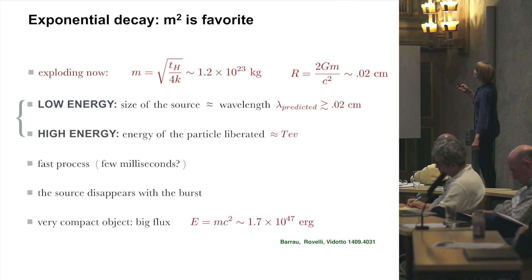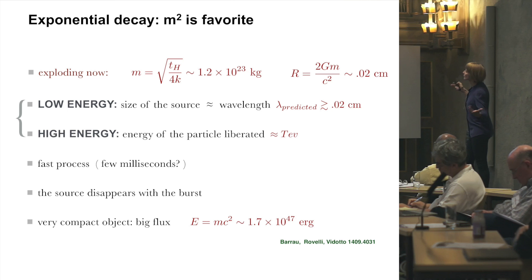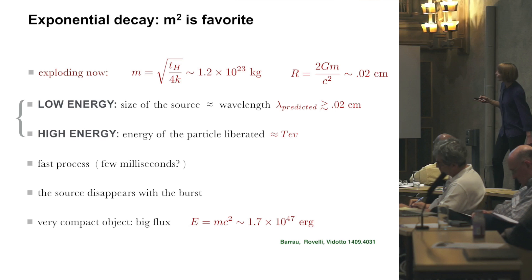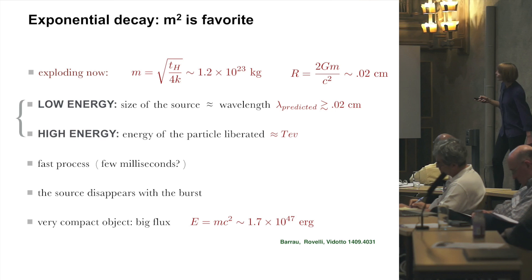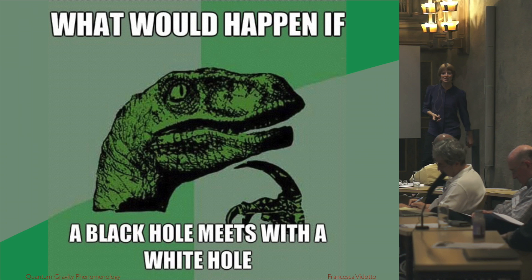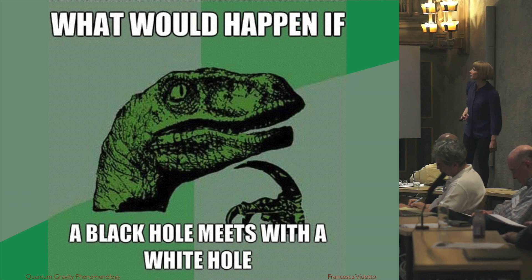This mass is not too small and not too big — it sits within the standard range for primordial black holes. Its energy corresponds to a very large flux of energy. So the question is: have we already seen something like this in the sky? Have astronomers already detected something compatible with these characteristics?